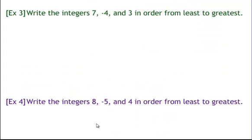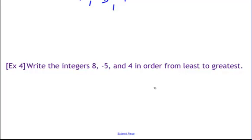Now I want you to do this on your own — write these integers in order from least to greatest. Pause now. You should have gotten for number 3: negative 4, then 3, then 7. And for the integers 8, negative 5, and 4: the least is our negative number, negative 5, then 4, then 8.